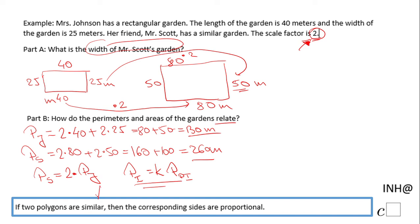Let's go to the last part of Part B: the area. The area of Miss Johnson's garden will be 25 times 40, which is 1000 square meters. And the area of Mr. Scott's garden will be 80 times 50, which is 4000 square meters.